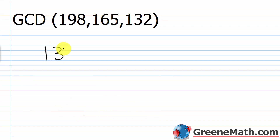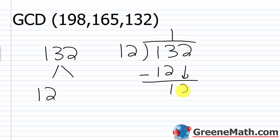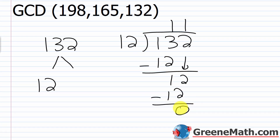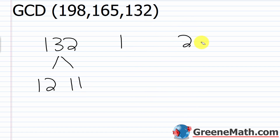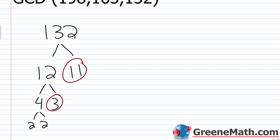For 132: it's even, and the last two digits 32 are divisible by 4; also 1+3+2=6 which is divisible by 3. So 132 is divisible by both 4 and 3, meaning it's divisible by 12. Dividing 132 by 12 gives 11. Eleven is prime — circle it. Twelve is 4 × 3, and 4 is 2 × 2 — all prime. So 132 = 2 × 2 × 3 × 11.